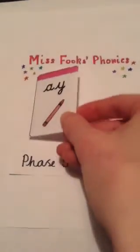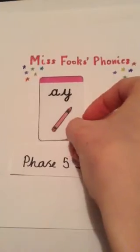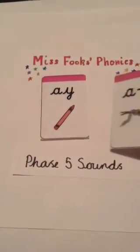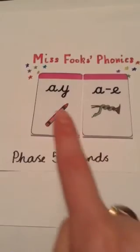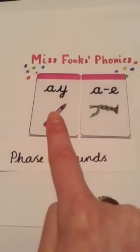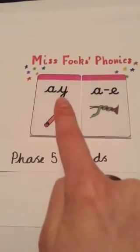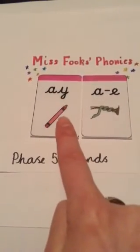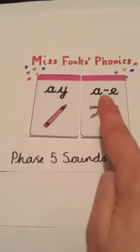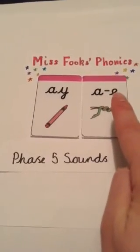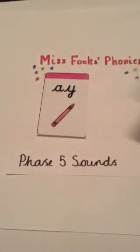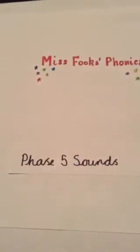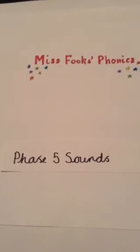Some sounds may sound the same but be spelt differently, so with different graphemes. For example, the A sound could be spelt A-Y as in 'crayon', or A with a split diagraph E as in 'snake'. So look out for some of these in our Phase 5 sounds.